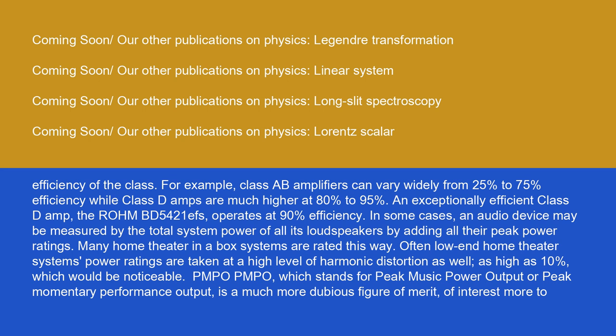In some cases, an audio device may be measured by the total system power of all its loudspeakers by adding all their peak power ratings. Many home theater in a box systems are rated this way. Often low-end home theater systems power ratings are taken at a high level of harmonic distortion as well, as high as 10%, which would be noticeable.